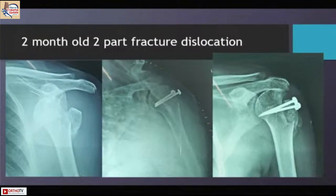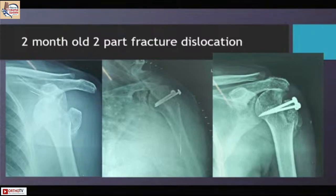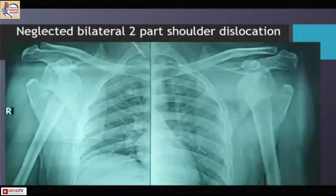In the subcontinent we see a fair number of neglected fracture dislocations. In neglected varieties, be particularly careful when retrieving fragments — do not be enthusiastic in holding them with towel clips or Kocher clamps because they tend to be porotic. Always tag them with Ethibond at the musculotendinous junctions and use them as pull-out strands. You won't have good radiology in neglected dislocations, but function and recovery in two-part fracture dislocation will be reasonably better than three-part and four-part, especially with osteosynthesis.